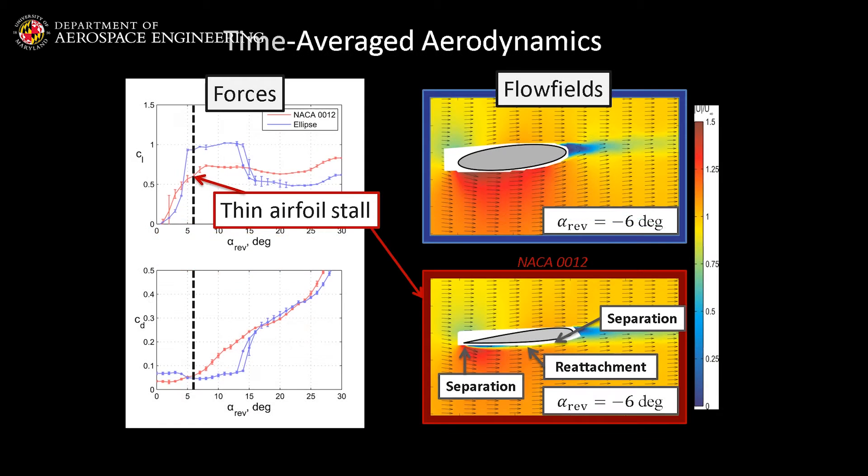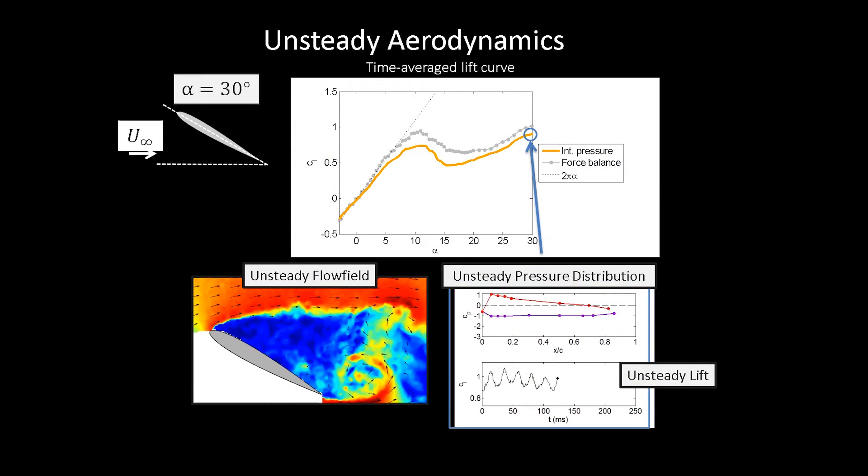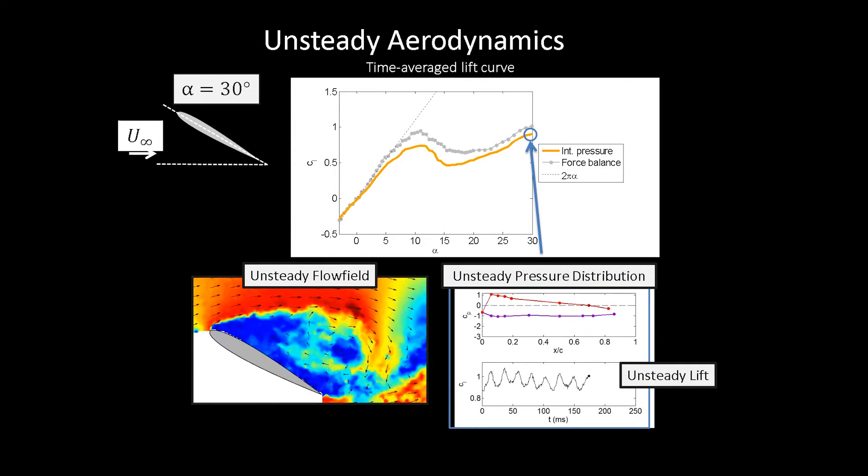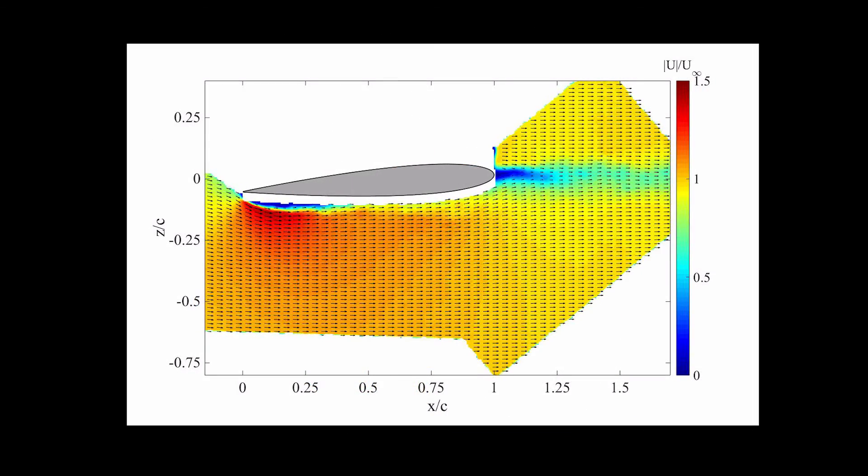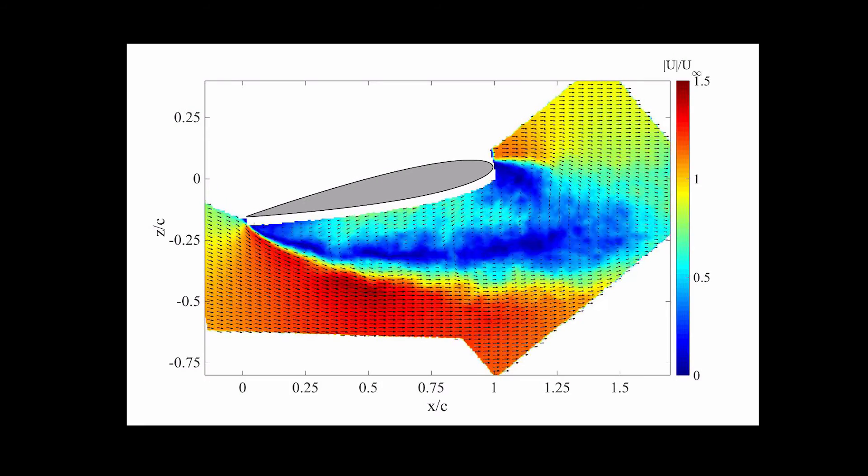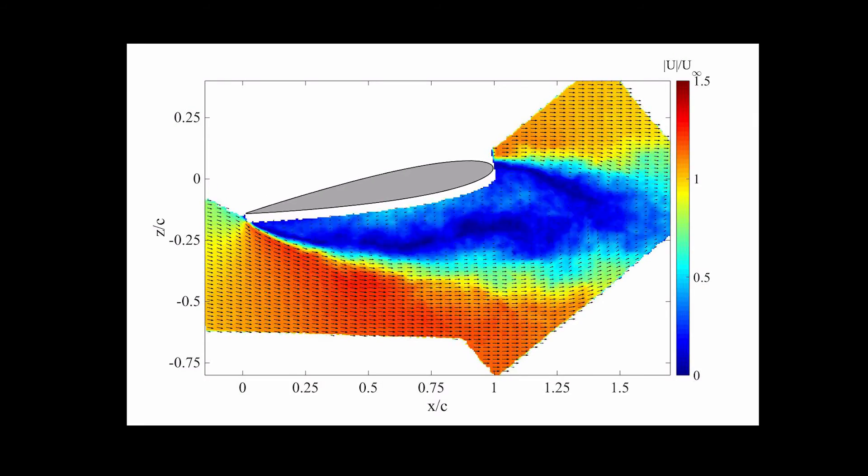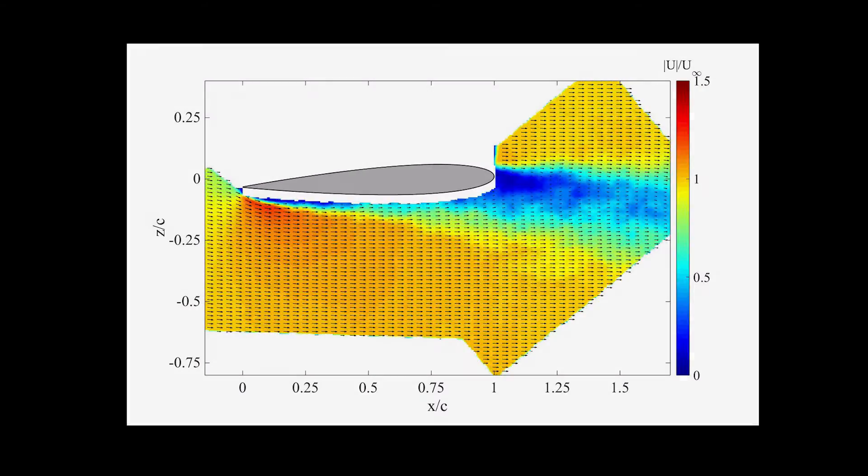I'm looking at both the time average forces in flow fields, as well as the unsteady forces in flow fields. To do this, I used unsteady pressure transducers and time-resolved PIV, which involves a high-speed laser and high-speed cameras to slow down visualization of the flow and quantify how fast it's going in different regions, as well as quantifying vortex structures and their trajectory.